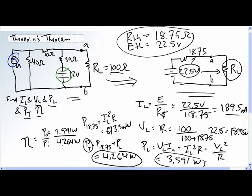So what is our efficiency? 3.591 divided by 4.264 gives us an efficiency of 84.2 percent.